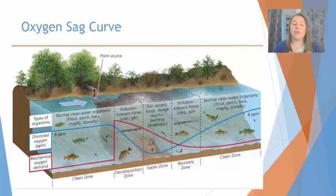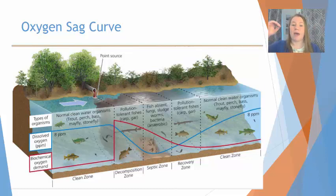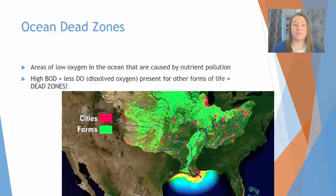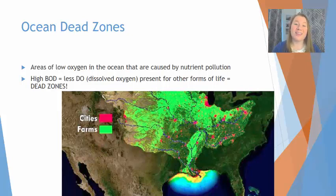As we get away from that point source over time, we're going to see the biochemical oxygen demand start to decline, and the dissolved oxygen start to come back up. This takes a fair amount of time, and if the water body spends too much time in that septic zone where there is very little oxygen, we are going to see large die-offs. This is very similar to what's happening in ocean dead zones — a very large dead zone exists in the Gulf of Mexico — which are areas with low oxygen primarily caused by nutrient pollution with high biochemical oxygen demand and very little dissolved oxygen.